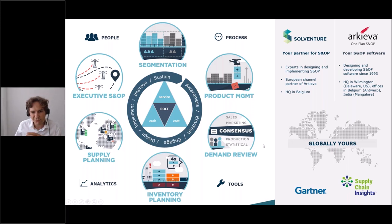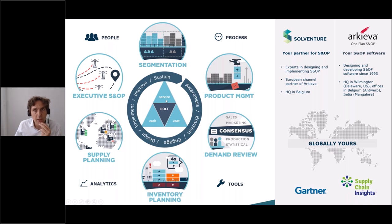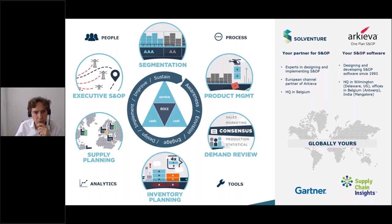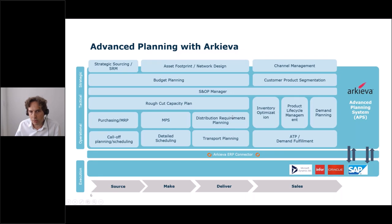Demand is an input to supply planning and to balancing the triangle. Inventory parameters are also an input to supply planning, but a lot of the inventory positions are defined by the supply planning processes themselves. Supply planning is really at the heart of balancing that triangle. If you want to run scenarios and evaluate them for your exec SNOP meeting, you need to test them on supply capabilities — so supply planning is key to supporting a good exec SNOP meeting.